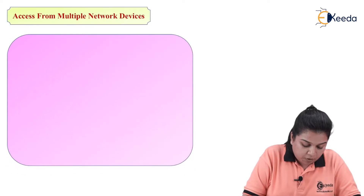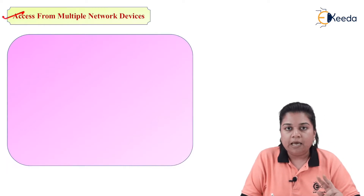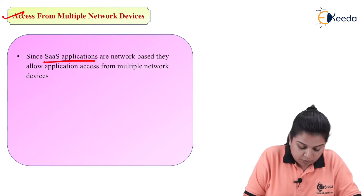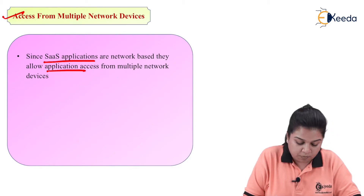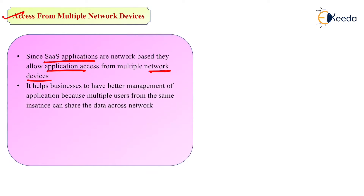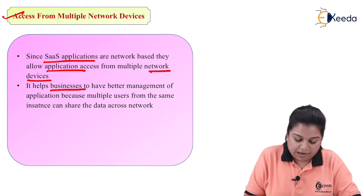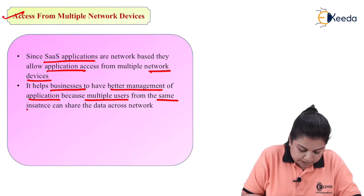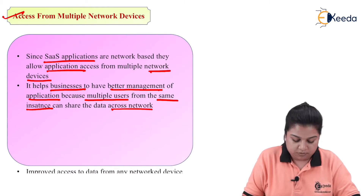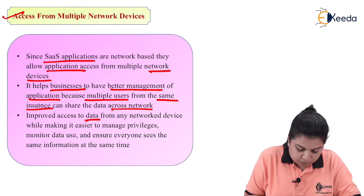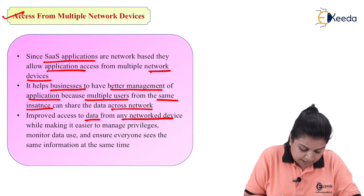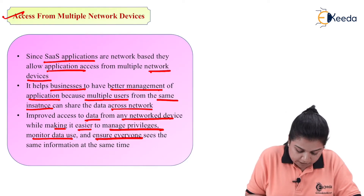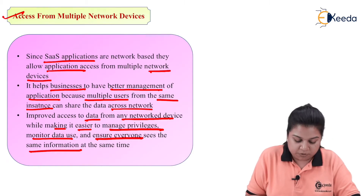Another characteristic of Software as a Service is access from multiple network devices. Since SaaS applications are network-based, they allow application access from multiple network devices. This helps businesses have better management of applications because multiple users from the same instance can share data across a network. Using a single network improves access to data from any device while making it easier to manage privileges, monitor data use, and ensure everyone sees the same information at the same time.